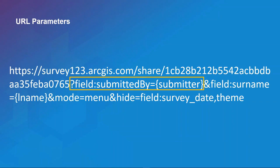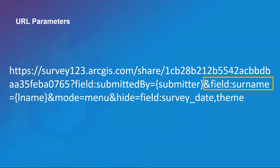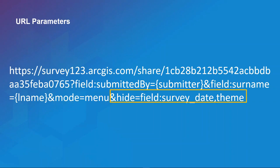When we open this survey from a particular geometry on our web map, the value from the 'submitter' field is automatically populated in the 'submitted by' field. We can pass additional dynamic attributes to the 'surname' field. There's also a new parameter called 'mode,' which allows the user to choose whether to open the form in the field app or a browser — with 'menu' presenting both options. Another new parameter called 'hide' allows you to hide specific fields or elements from the survey, such as the survey date field or a custom theme.